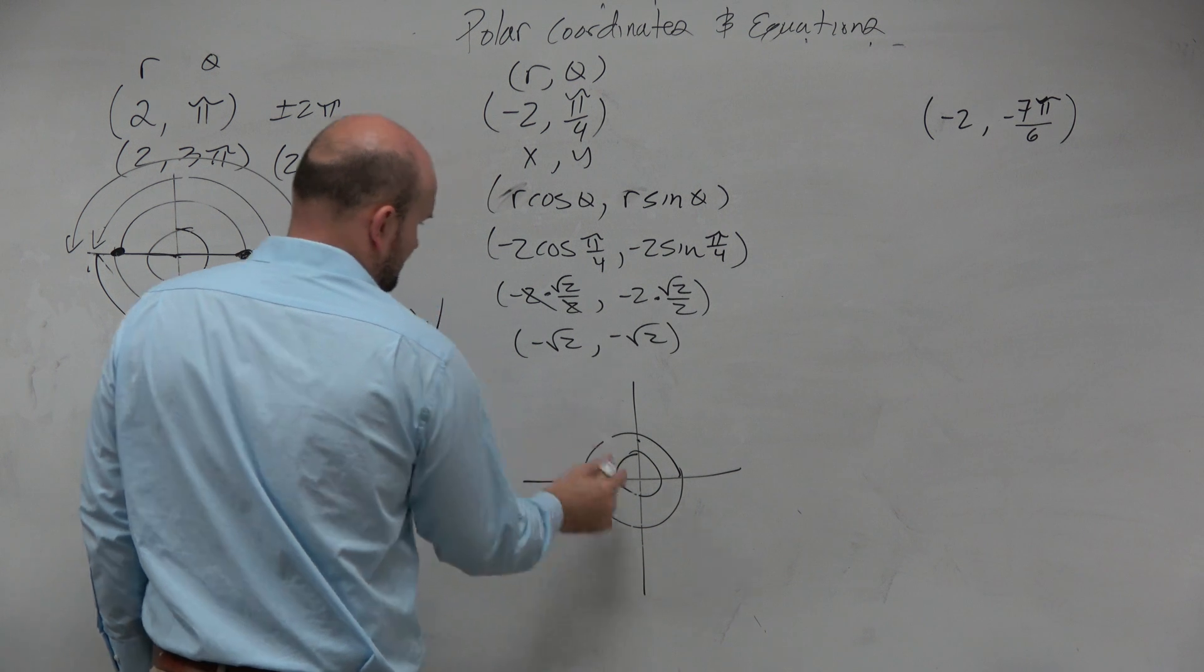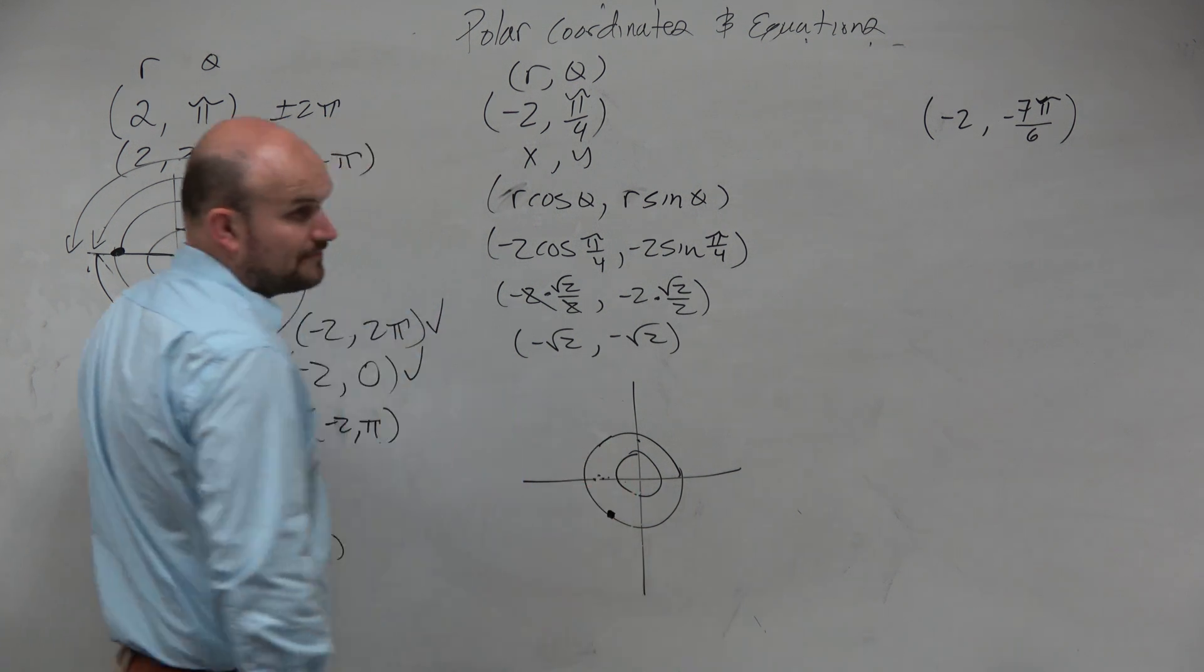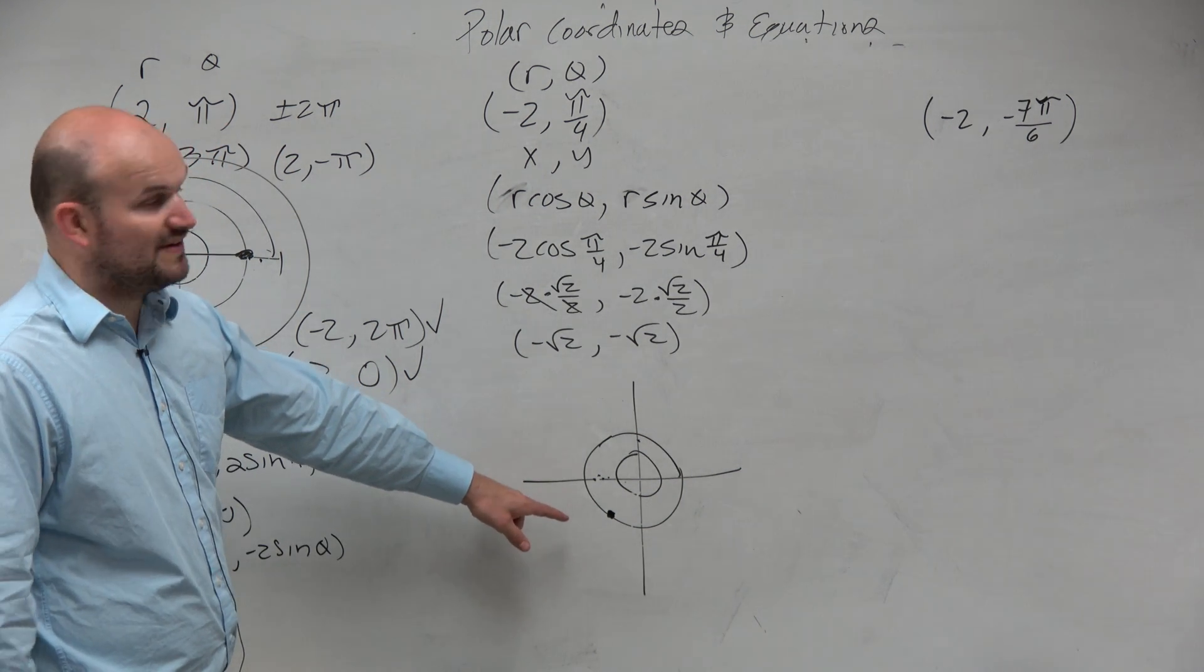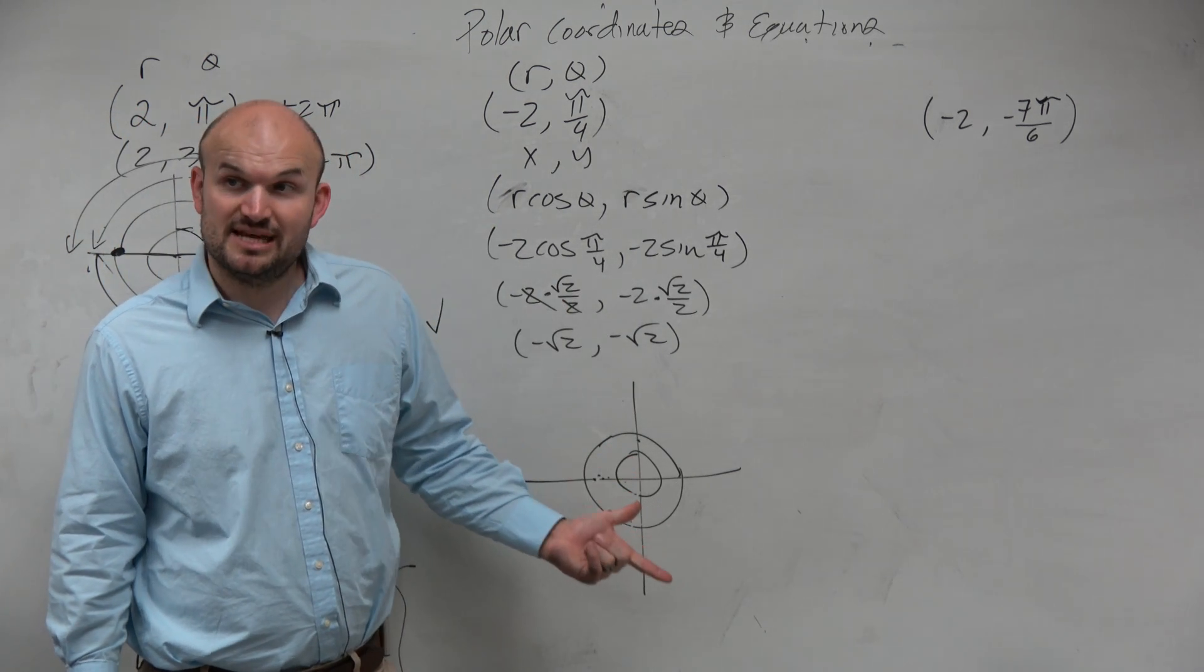So yeah, it'd be down here. Both negative down here. So it'd be down here. Good catch. So that would be my point. So if I needed to plot the point, that's good. But now, again, what if I need to find different representations of this point?